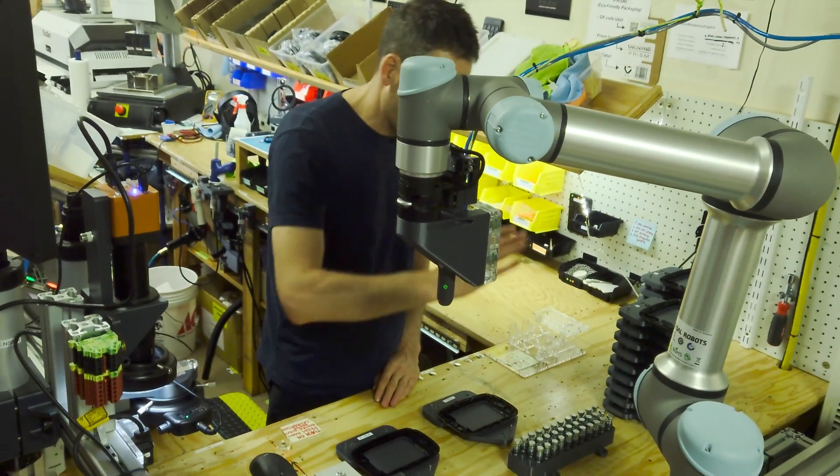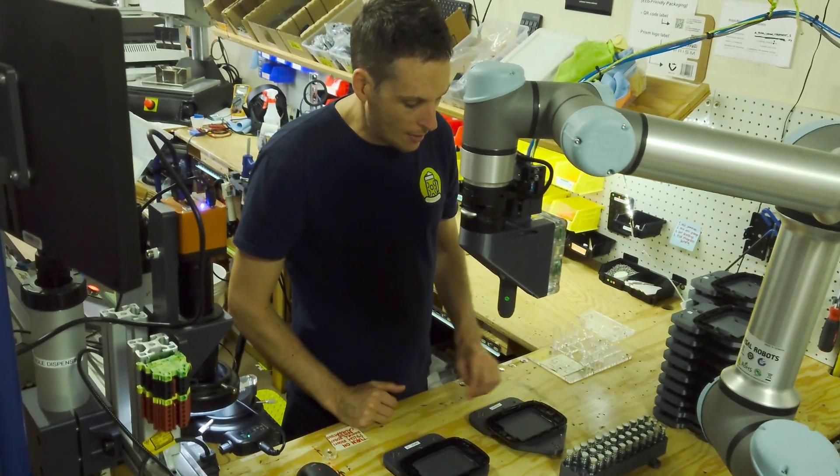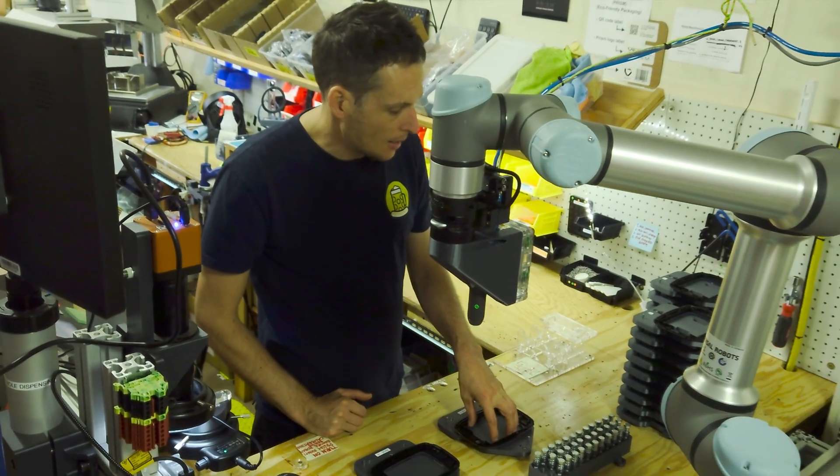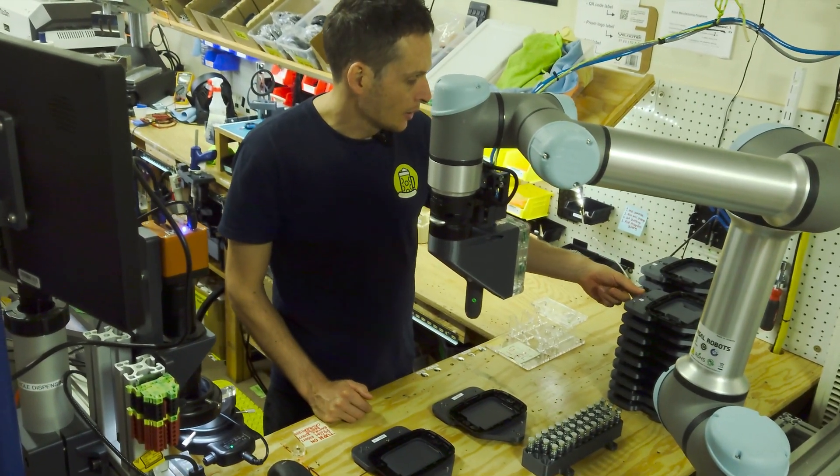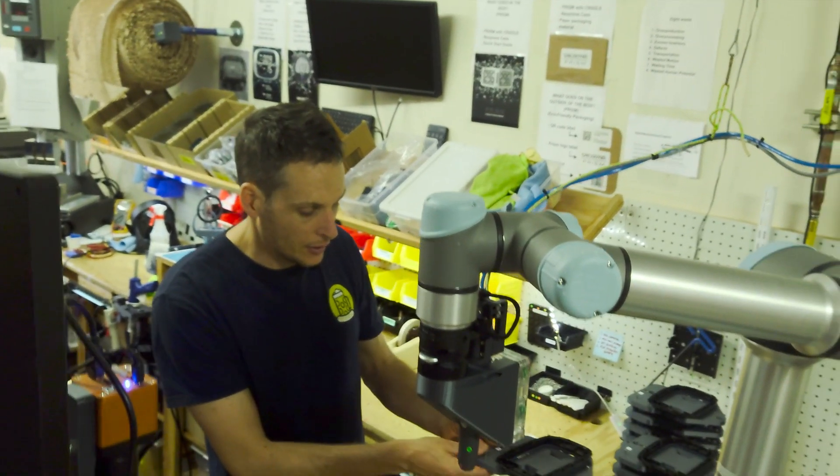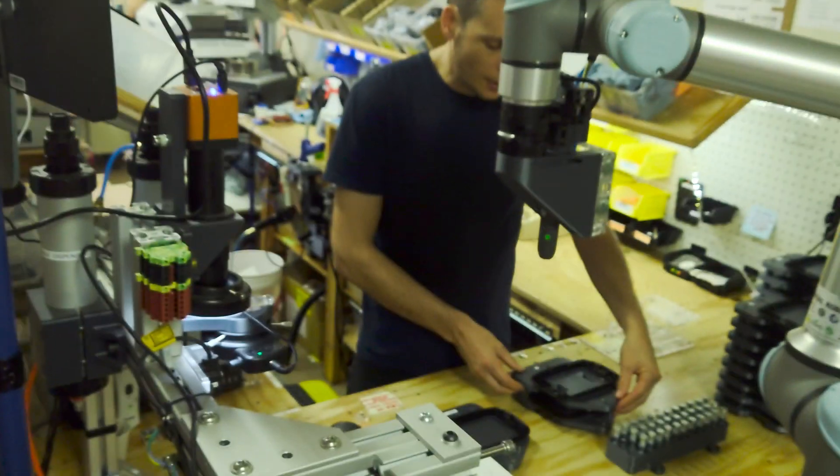And once there's glue on the LCD, sort of like making a sandwich, the robot's going to plunk it down there, and then once the LCD's in place, the robot's going to grab one of these fixture plates here, drop it on top.